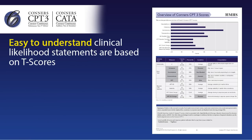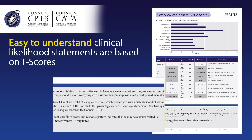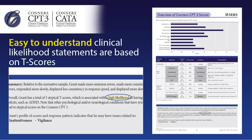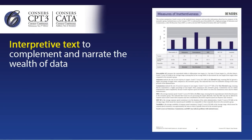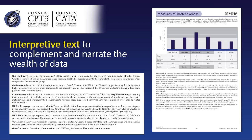The easy-to-understand clinical likelihood statements are based on T-scores and displayed as very high, high, moderate, or minimal. The CPT-3 and CATA also have interpretive text to complement and narrate the wealth of data.